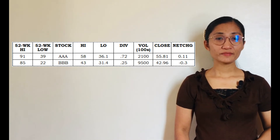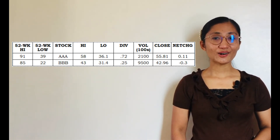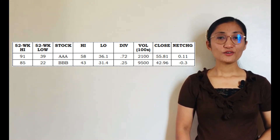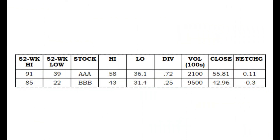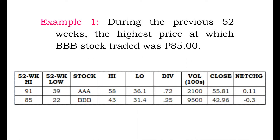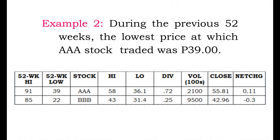In addition, the table beside me illustrates how stock information can be presented. 52-week high or low, or 52-WK HI-LO, represents the stock's highest or lowest selling price in the previous 52 weeks. Example 1: During the previous 52 weeks, the highest price at which BBB stock traded was 85 pesos. Example 2: During the previous 52 weeks, the lowest price at which AAA stock traded was 39 pesos.